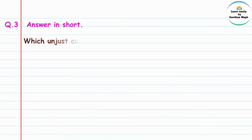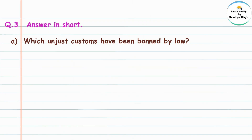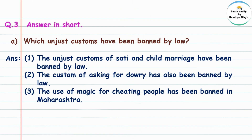Question 3: answer in short. A) Which unjust customs have been banned by law? 'Unjust' manje anyayakar, 'customs' manje churadi, 'banned' manje bandi ghalane, 'law' manje kayda. Answer: The unjust customs of sati and child marriage have been banned by law. Sati ani bal vivah ya unjust customs var kaydane bandi ghalnyat ali ahe. The custom of asking for dowry has also been banned by law. 'Dowry' manje hunda — hunda magnyachya prathevari hi kaydane bandi ghalnyat ali ahe.